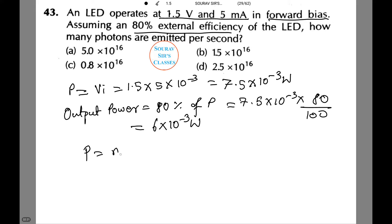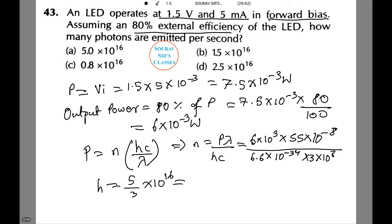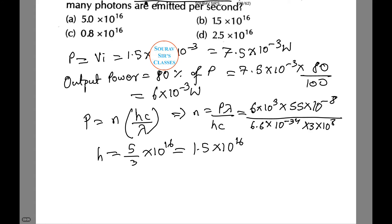Or power equals to n hc by lambda. Now putting in the values, we find n equals to P lambda by hc, which equals 6 into 10 to power minus 3 into 55 into 10 to power minus 8, whole divided by 6.6 into 10 to power minus 34 into 3 into 10 to power 8. Or n equals to 5 by 3 into 10 to power 16, which equals 1.5 into 10 to power 16. Or this answer corresponds with number B.